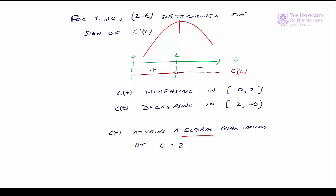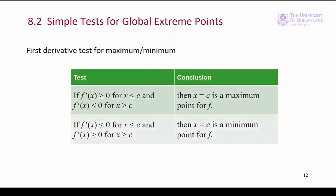Here we have a simple test for global extreme points. If our first derivative is one sign below c and the other sign above c, then we'll either have a maximum or a minimum. If the first derivative goes from positive to negative we'll have a maximum. If the first derivative goes from negative to positive at c, then we'll have a minimum. If the interval we're considering is the domain of the function, then these are global extreme points.